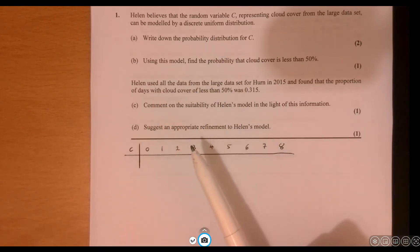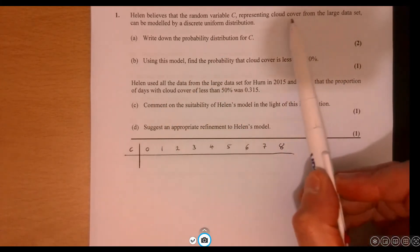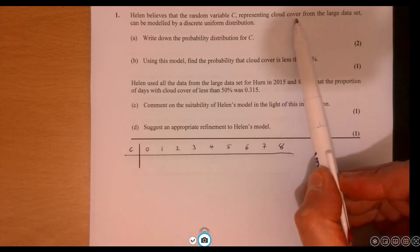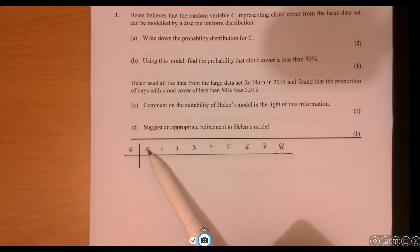Now you need to have some knowledge here of the large data set. And we're talking about cloud cover. Cloud cover is measured on a scale from 0 to 8. So if there is cloud cover, if it's a complete whiteout as such, then it's going to be 8.